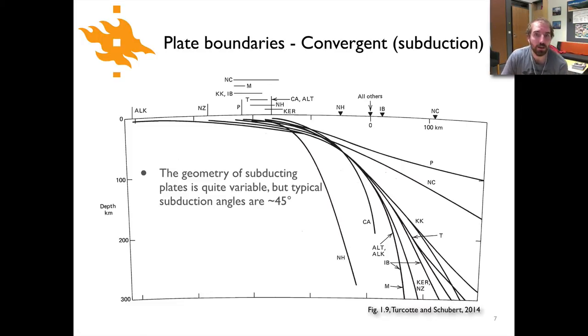Here we have just a diagram of the kind of generalized geometry of various subduction zones across the world. This is again from the Turcotte and Schubert book, and all these little abbreviations are different subduction zones, and so you can kind of take a look at the textbook if you're curious about which is which. But what we can see even just from looking at this is that the subduction angle, as indicated here by the geometry of these kind of bending plates, is about 45 degrees on average. Some variation, obviously there's some that are steeper and some that are shallower, but 45 degrees is kind of a typical angle.